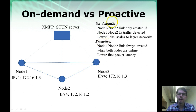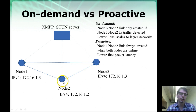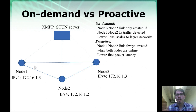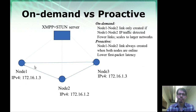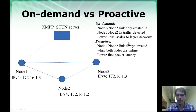An alternative is the on-demand model, where node 1 will not create a link until node 1 sends a message to node 2, or until node 2 sends a message to node 1. A node may join a GroupVPN of a thousand other nodes, but if it's only a client talking to a single server, it's only going to create a link to that server. This results in fewer links overall in the overlay and allows us to scale to larger networks.